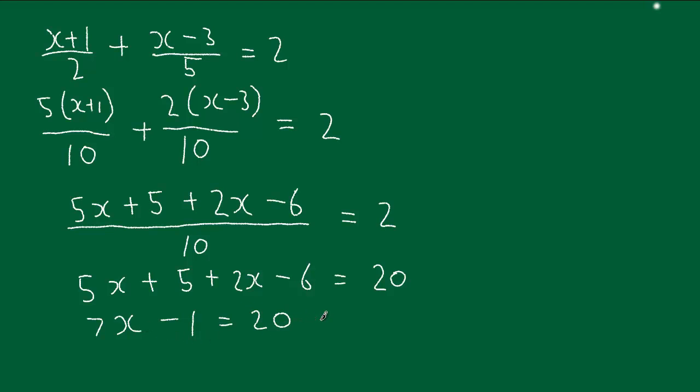Nearly there. We're just going to move over here a bit now. So that's a minus 1. To get rid of the minus 1, we add 1 to both sides. So that means 7x will equal the 20, we add the 1 to it, 21.